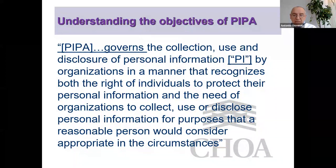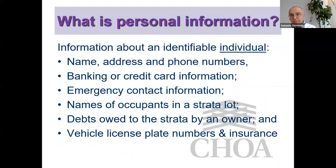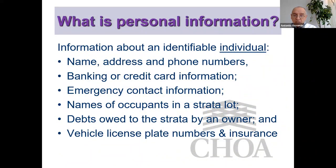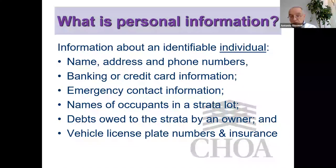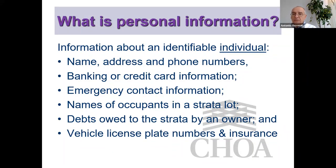There are times personal information may need to be disclosed to proceed with enforcement requirements strata corporations have under the Act. Personal information includes owners', tenants', and occupants' names, addresses, and phone numbers; banking or credit card information if they are paying strata fees, levies, or user fees; emergency contact information if provided; and vehicle license plate numbers and insurance. Bylaws demanding owners display vehicle insurance are collecting personal information — the obligation is only to verify the vehicle is insured.